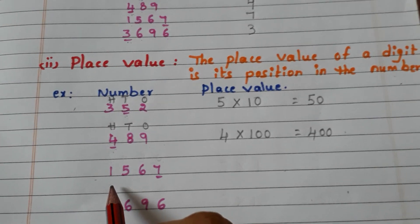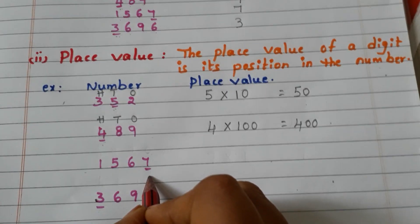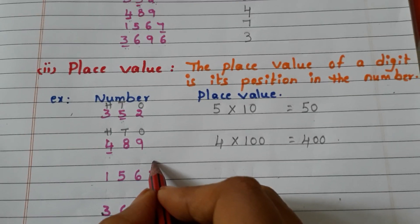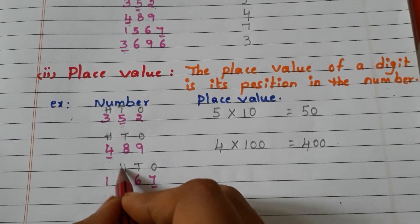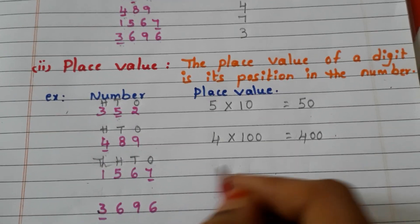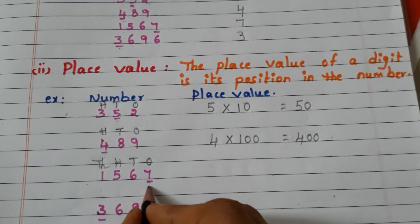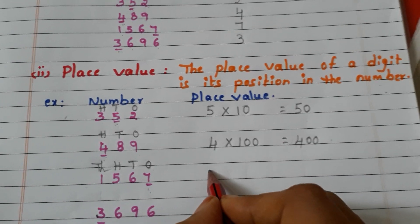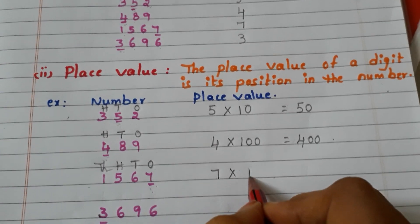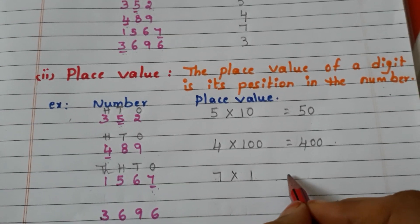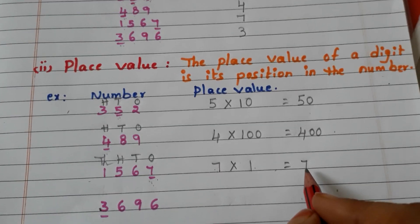Let us go to the third number. We have to find out the place value of 7. First, write the places: 1's, 10's, 100's, 1000's. Write the face value of 7 — face value of 7 is 7 itself. In which place is 7? The 1's place. 7 ones are 7. So the place value of 7 is 7.